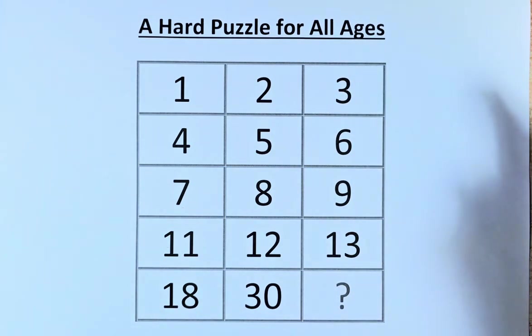We need to manipulate 1, 2, 4, 7, 11 to give us 18. 2, 5, 8, 12 to give us 30. And 3, 6, 9, 13 to give us the question mark.